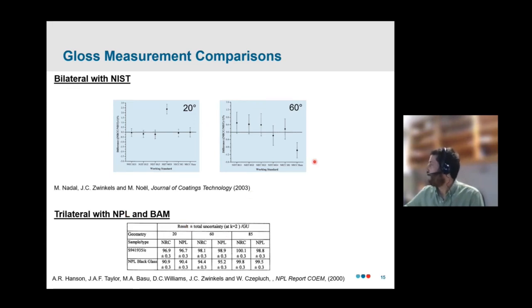And it's a similar story. We did another comparison around the same time involving NPL and BAM. So you do, when you look at this data, you do occasionally see some outlier samples. So there's one in the 20 degrees and one in the 60 degrees. The 60 degree sample, for example, is a haze gloss standard. So we believe it has a slightly more complicated BRDF than just a nice, smooth optical surface. And that kind of, well, that's probably what complicates getting a reliable measurement with that sample.